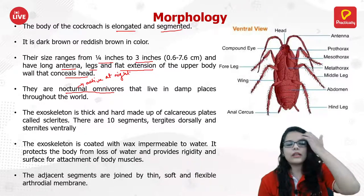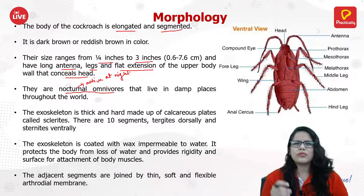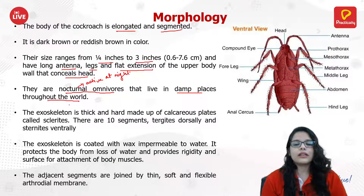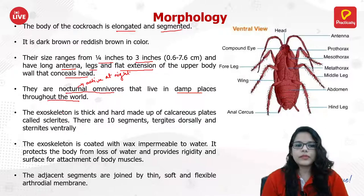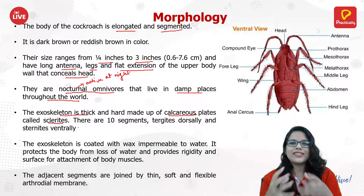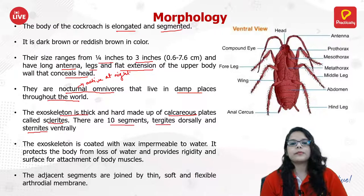Even if you clean every day, cockroaches come back — they are very special creatures found mostly at night. They live in damp, dark places throughout the world. Their exoskeleton is thick, made up of calcareous plates called sclerites. There are around 10 segments: in the dorsal view they are known as tergites, and in the ventral view as sternites.